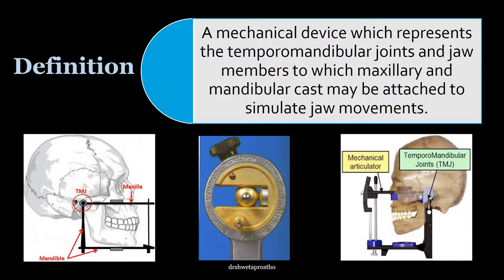The definition. What are articulators? An articulator is a mechanical device which represents the temporomandibular joint and the jaw members — maxilla and the mandible — to which the maxillary and the mandibular cast will be attached to simulate the jaw movements.